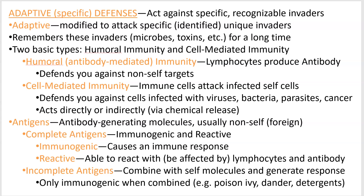So if you get exposed to a flu virus, let's say you catch the flu in September, you're probably not going to catch that same virus again later because your immune system will have adapted to it. Now, the next year flu is a weird one because it changes a lot, and this is the thinking behind herd immunity also.